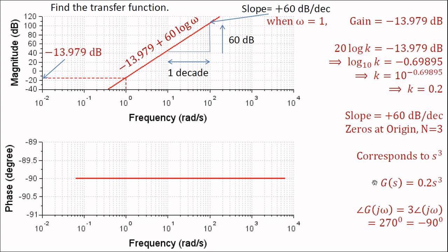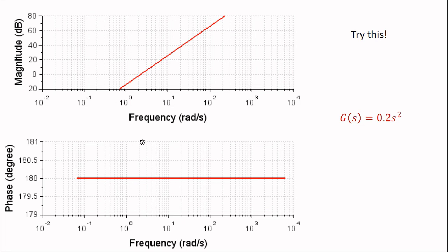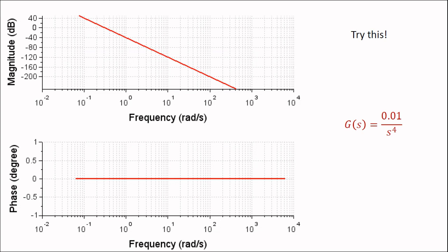With this, we can conclude that sketching the Bode plot from a transfer function or extracting the transfer function from a Bode plot should be straightforward. Two exercise Bode plots have been provided — try to determine their transfer functions, or use given transfer functions to sketch the Bode magnitude and phase plots. Next lecture will cover Bode plots for transfer functions with poles and zeros at non-zero values. Thank you.